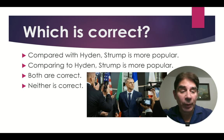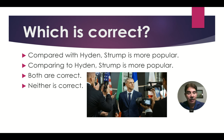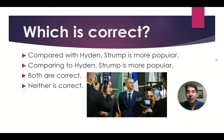Which of the following is correct? A: 'Compared with Haydn, Strump is more popular.' B: 'Comparing to Haydn, Strump is more popular.' Both are correct. Neither is correct.